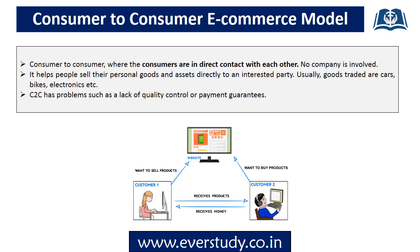Next is the Consumer to Consumer e-commerce model. In the C2C model, consumers are in direct contact with each other. No company is involved here. Through C2C, people sell their personal goods directly to interested parties — for example, a consumer posting an ad on OLX to sell their old car. That person is not a business or company; they are a consumer selling to another consumer. Here, quality control is not possible and there is no guarantee of payment.